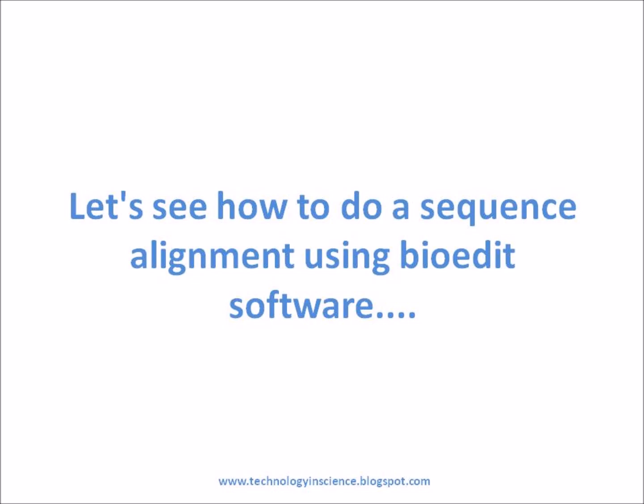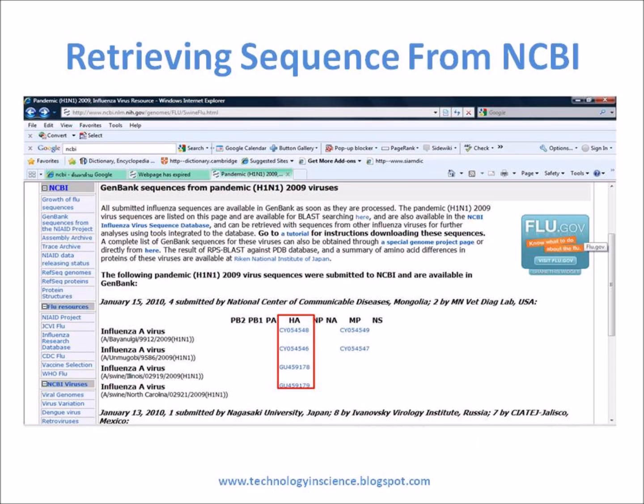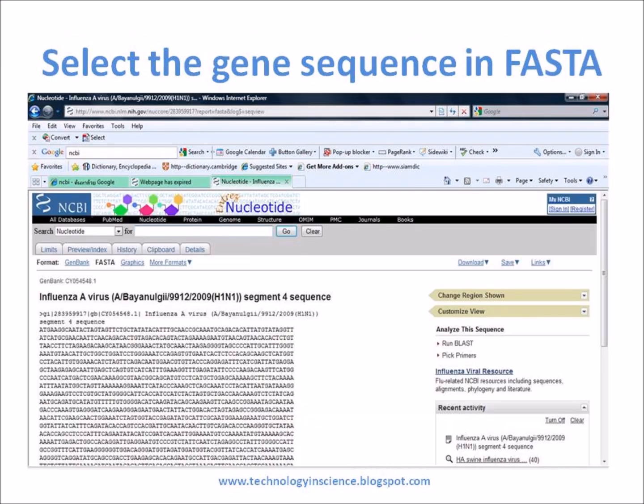First, you have to get the sequences of your interest — it can be a whole genome sequence or a particular gene of interest. The sequence can be retrieved from the NCBI website. For example, let's search for the hemagglutinin gene of H1N1. You can save the selected gene sequence in FASTA format, which can be used in BioEdit software.